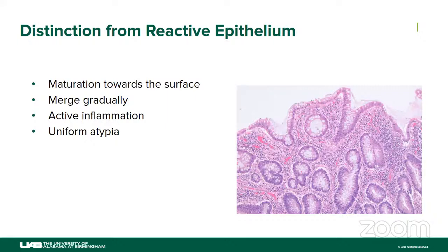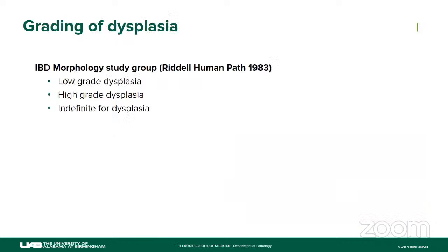The main problem in diagnosing dysplasia in IBD patients is differentiating it from reactive epithelium. Conventional criteria include: surface maturation favoring reactive changes, sharp focus versus gradual merging favoring reactive, heavy inflammation suggesting reactive, and uniform atypia tending toward reactive. In reality, however, all of these features can also be seen in dysplastic lesions — they are not very specific for reactive changes. I am going to show you many pictures demonstrating this.